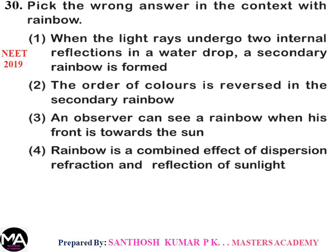Question 30: Pick the wrong answer about rainbow. Options: two internal reflections form secondary rainbow (correct); order of colors is reversed in secondary rainbow (correct); observer can see rainbow when his front is towards the sun (wrong — the observer must have his back towards the sun); rainbow is combined effect of dispersion, refraction and reflection (correct). Therefore option 3 is the wrong answer.